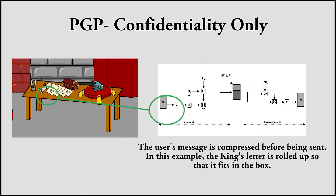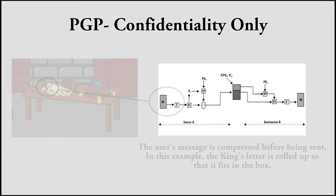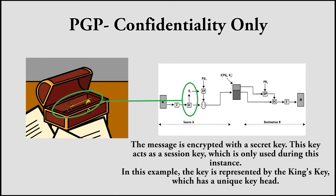The user's message is compressed before being sent. In this example, the king's letter is rolled up so that it fits in the box. The message is then encrypted with a secret key. This key acts as a session key, which is only used during this instance. In this example, the key is represented by the king's key, which has a unique key head.